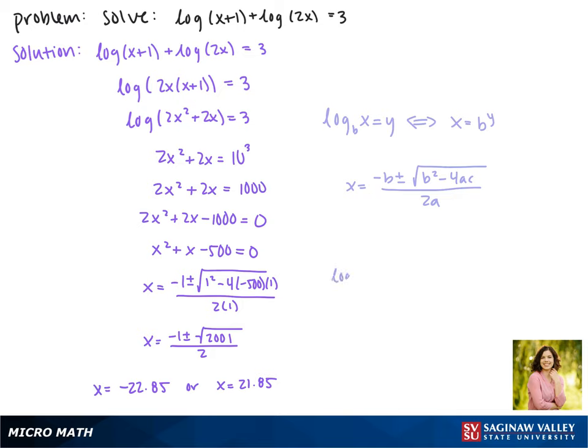The first gives us log(-22.85 + 1) + log(2 × -22.85) = 3. Now inside of each of our logarithms we have a negative number. Since we can't take the log of a negative number, this means that -22.85 is an extraneous solution.